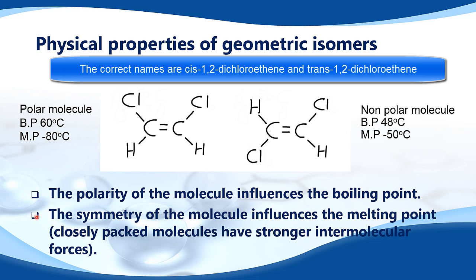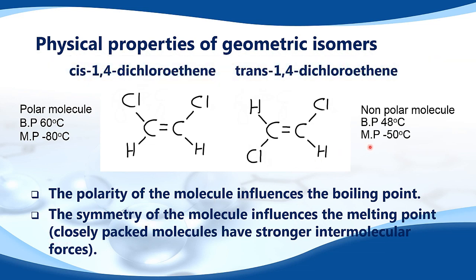The symmetry of the molecule influences the melting point. Closely packed molecules have stronger intermolecular forces. Comparing the melting points of the cis and trans isomers, the trans isomer has the higher melting point. The reason is that the trans isomer has greater symmetry, so the molecules are able to pack closely together, resulting in stronger intermolecular forces and therefore a higher melting point.